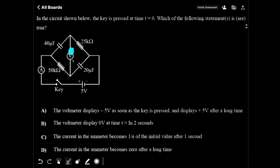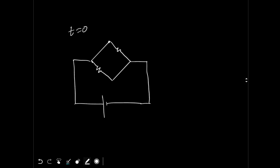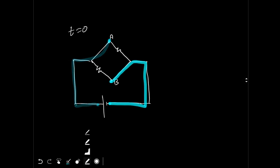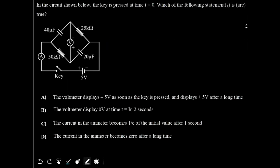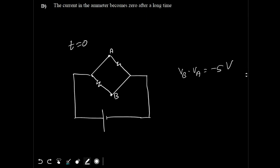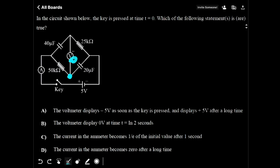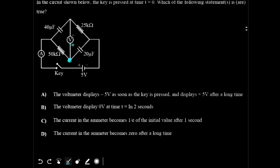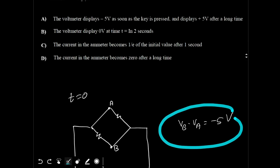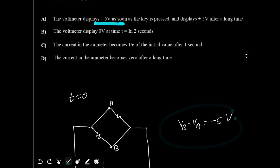The negative terminal of the battery is on one side and the positive terminal on the other. If I call this terminal A and this terminal B, then terminal A is directly connected to the positive end and terminal B is directly connected to the negative end. So VB minus VA will be minus 5 volt because the battery has EMF 5V. So at t equal to 0, the voltmeter will give a reading of minus 5 volt. This part is correct.